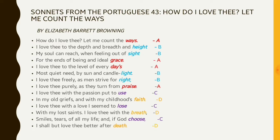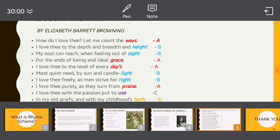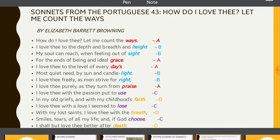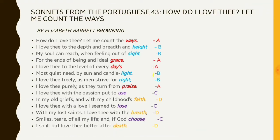Now look at the rhyme scheme. The first four lines rhyme as ABBA, ABBA, and the sestet is CDCDCD. So the rhyme scheme of the poem is ABBA ABBA CDCDCD.